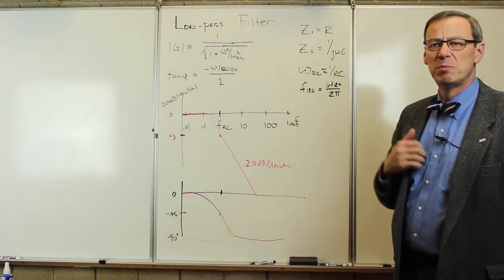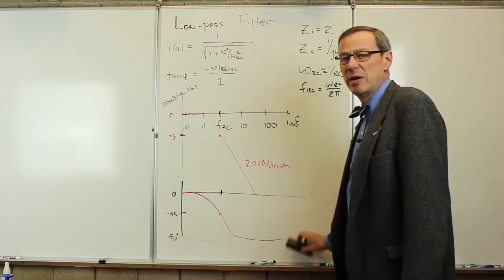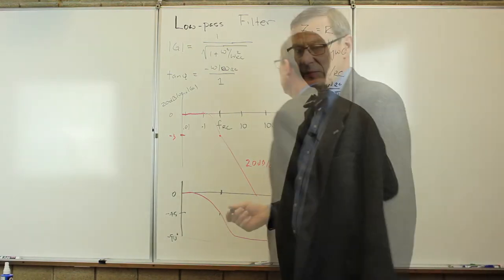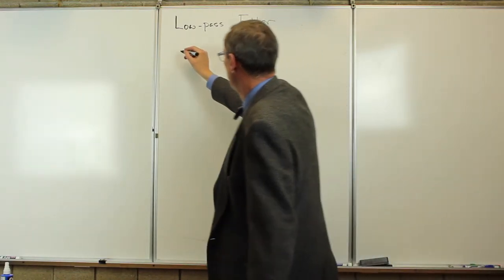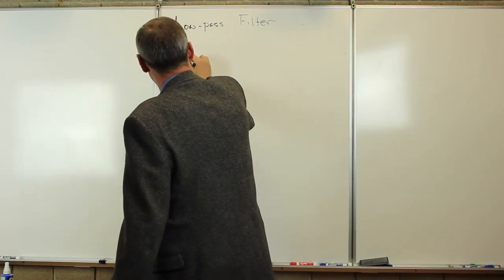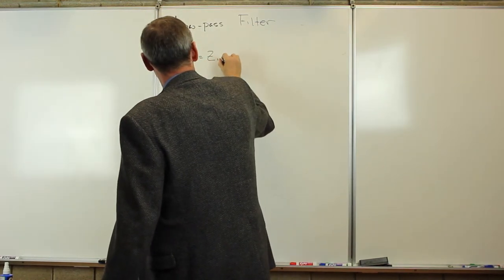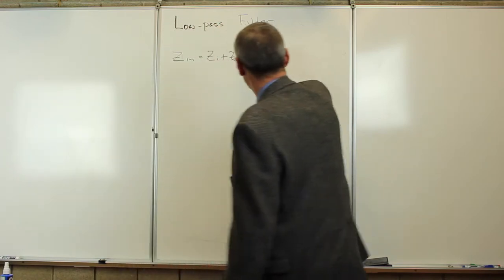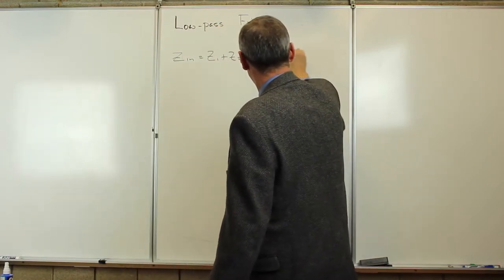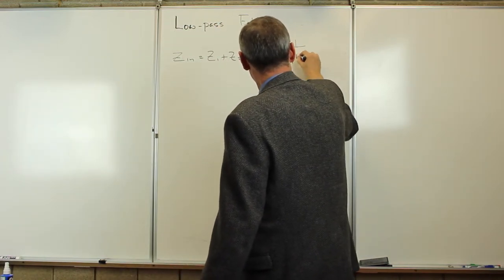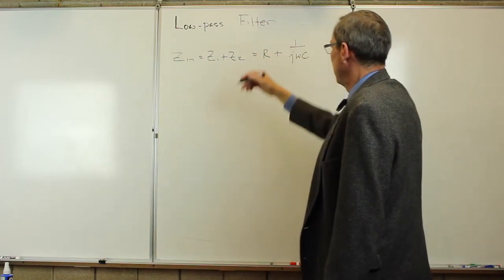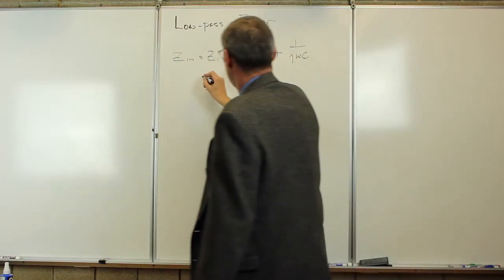The last thing to look at is the input and output impedance. So the input impedance, we just remember Zn is Z1 plus Z2, which is R plus 1 over J omega C.